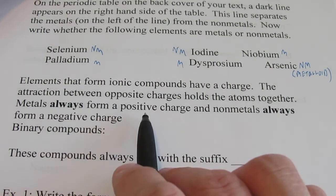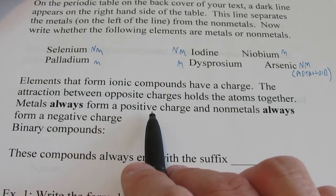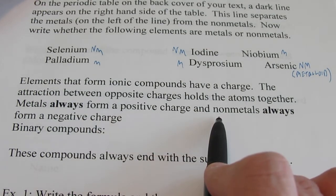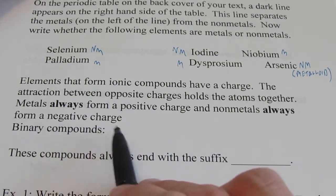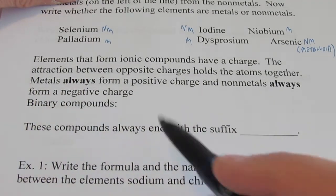Metals always form a positive charge. I'll bet I could say that 10 times and students will forget it. But metals always form positive charges. Non-metals, when they form ionic compounds, will always form negative charges.